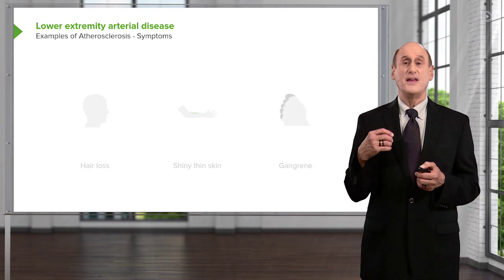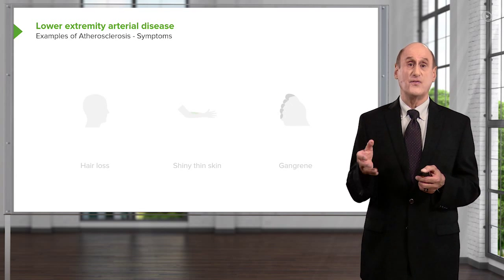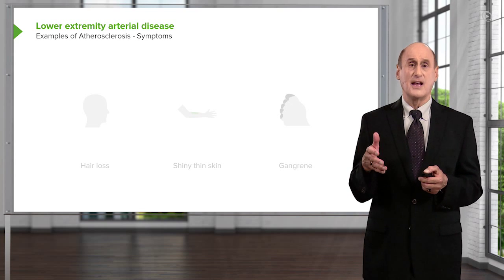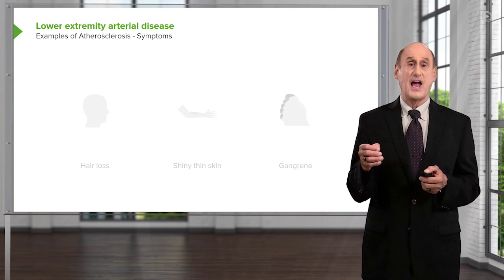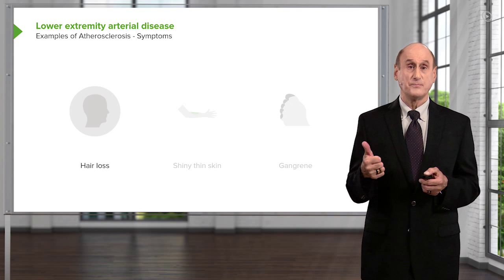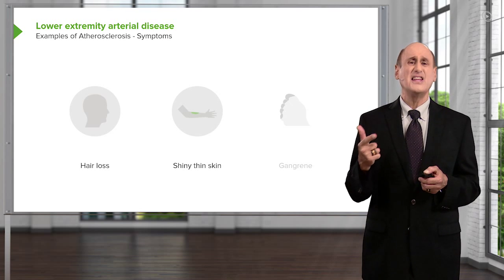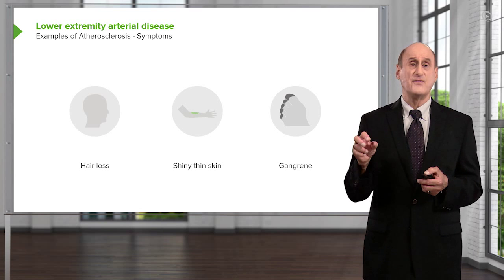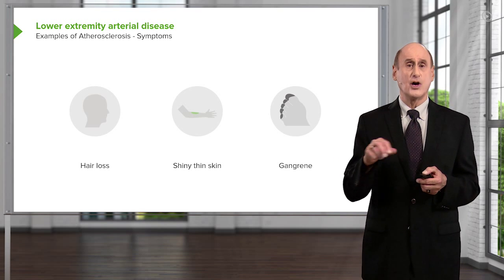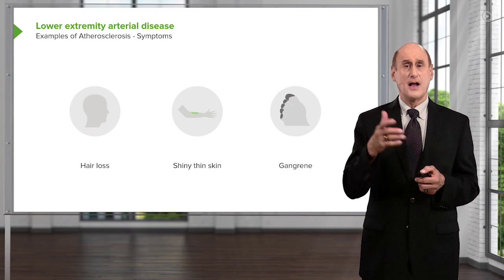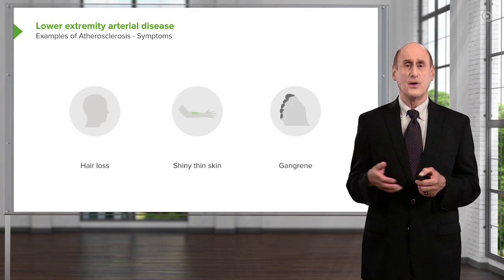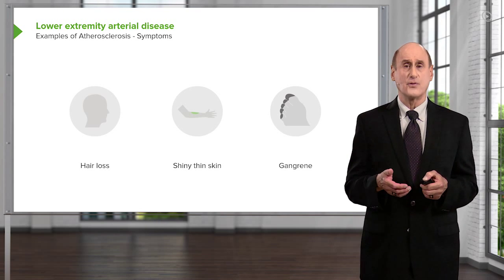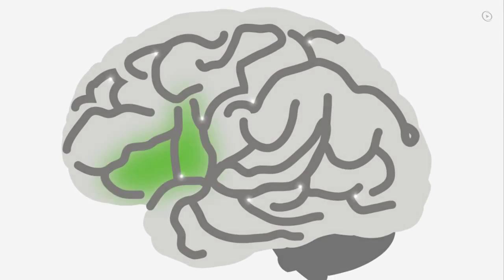When the atherosclerotic narrowing in the legs is severe, you can start to get some severe changes in the leg, such as hair loss or shiny, thin skin. Eventually you may even have death of tissue, usually of the toes — blackened areas. I'll show some pictures later of areas of gangrene on the toes and the fingertips.